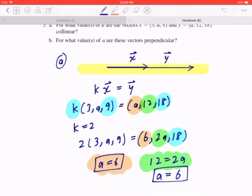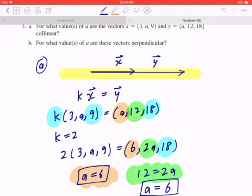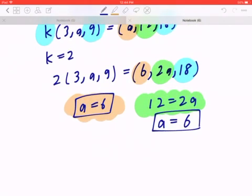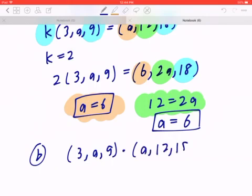In the second part, they're asking for what values of a are these vectors perpendicular. So if two vectors are 90 degrees apart, don't forget, the dot product must be 0. So you can take (3, a, 9) dot this with (a, 12, 18). And again, this will equal 0.